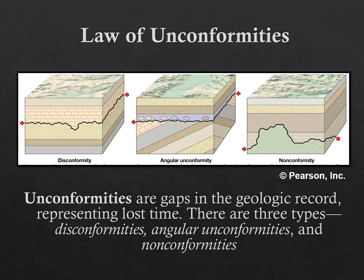Unconformities is the last relative dating law. Unconformities are gaps in the geologic record due to erosion. Erosion means we're destroying sediment layers, thus losing time. There are three different types of unconformities: disconformities, angular unconformities, and nonconformities.